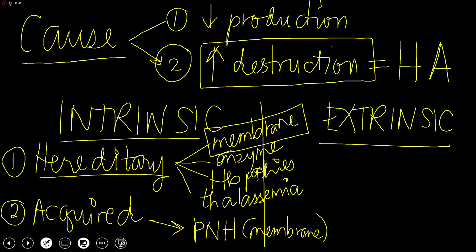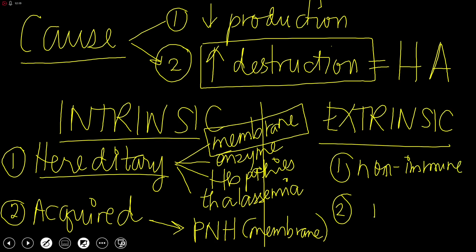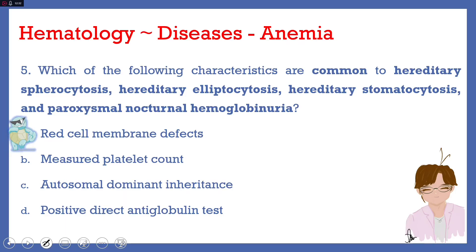Under the extrinsic causes of hemolytic anemias, we can classify them according to non-immune or immune causes. Full discussion of this topic is not going to be covered by this video. Number five is red cell membrane defects.